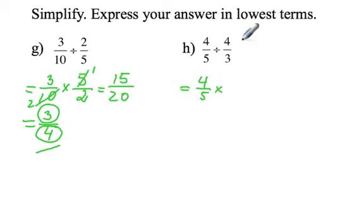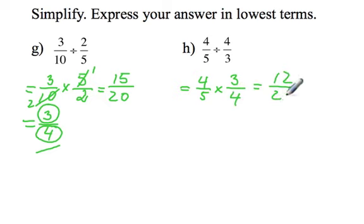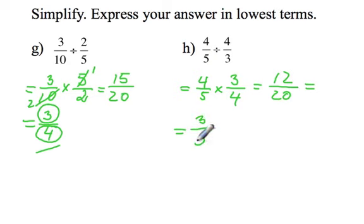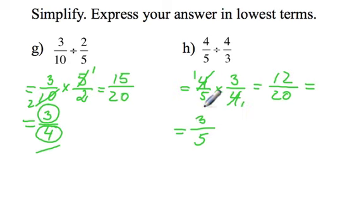Question H: again we have division, so 4 over 5 times the reciprocal of 4 thirds is 3 quarters. Now we have 12 over 20; both numerator and denominator divide by 4. 12 divided by 4 is 3 and 20 divided by 4 is 5, so the final answer is 3 fifths. A faster way would have been to notice that 4 divided by 4 is 1, so we have 3 fifths right away.